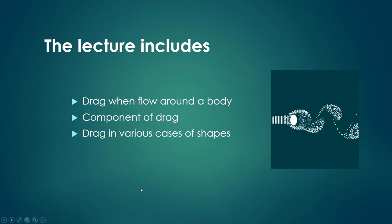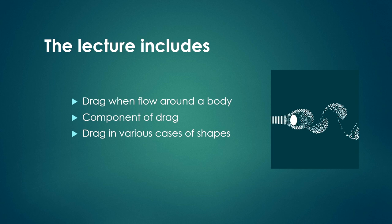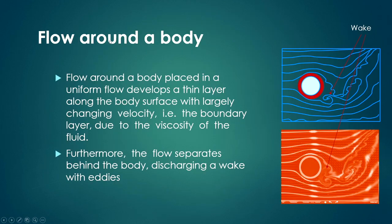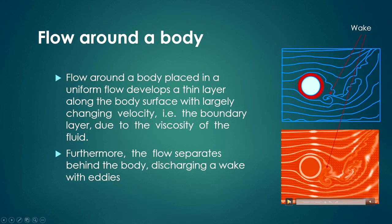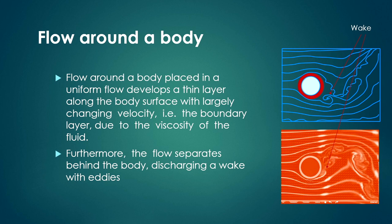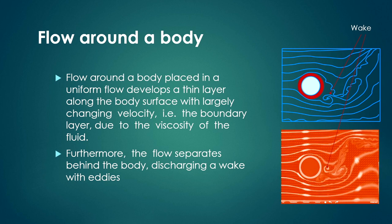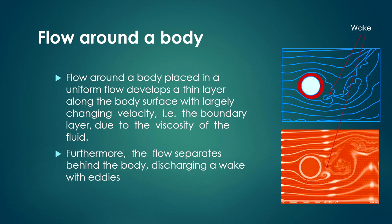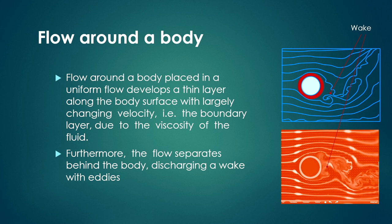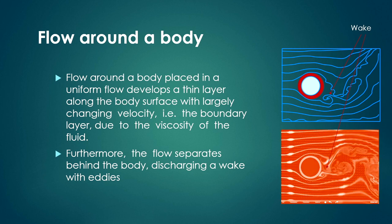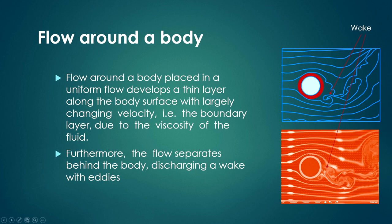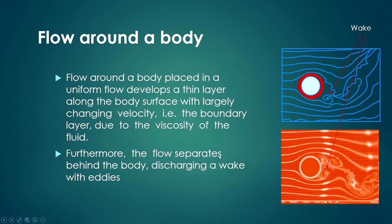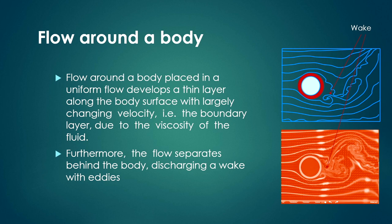Here we will try to know about the drag when flow occurs around a body, the components of drag, and drag in various cases of spheres and cylinders. When flow runs around a body placed in a uniform flow, a thin layer develops along the body surface with a largely changing velocity — that is the boundary layer — due to the viscosity of the fluid.